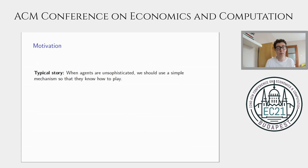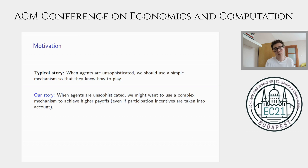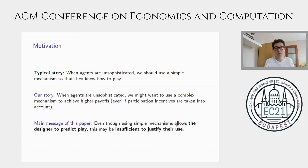The typical story in the literature is that when agents are unsophisticated, we should use a simple mechanism so that we know how they will behave and can predict play. We in this paper want to propose an alternative story, which is that maybe when agents are unsophisticated, that's precisely when we want to use a complex mechanism to achieve higher payoffs. And we want this story to be true in some cases, even if we take participation into account — even if we recognize that complex mechanisms may be seen as less attractive to the agents themselves.